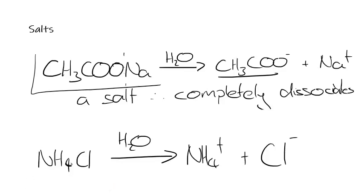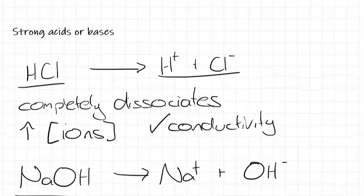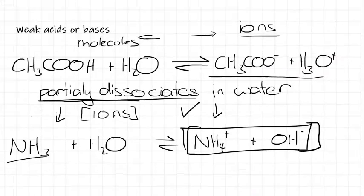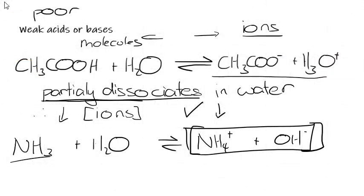So in summary: salts are good conductors, strong acids and bases are good conductors, and weak acids and weak bases are poor conductors. You might need to compare and contrast any two solutions — I would say, because one either partially dissociates or fully dissociates, link that to the concentration of ions in the solution, and then describe whether it's a poor or good conductor.